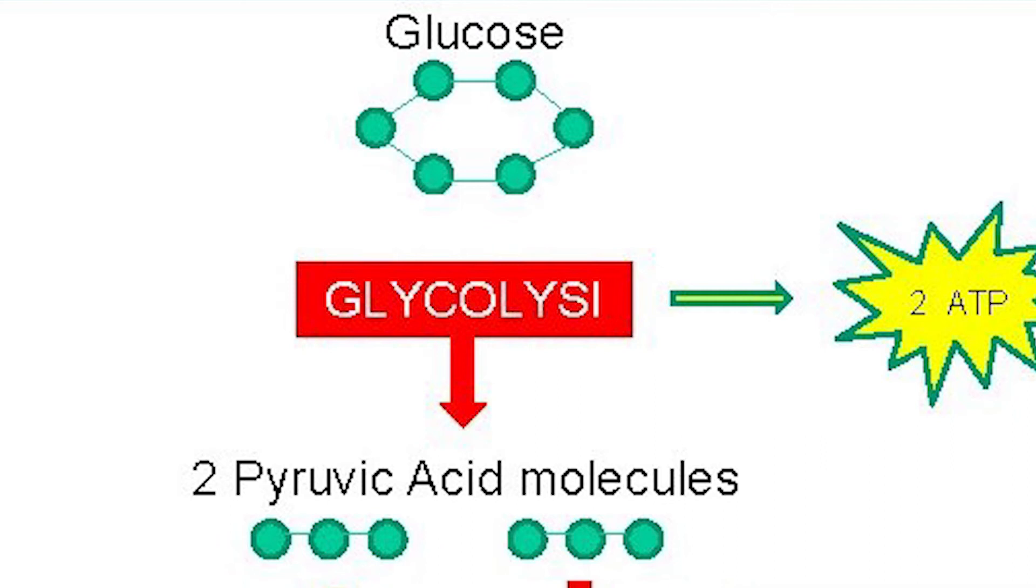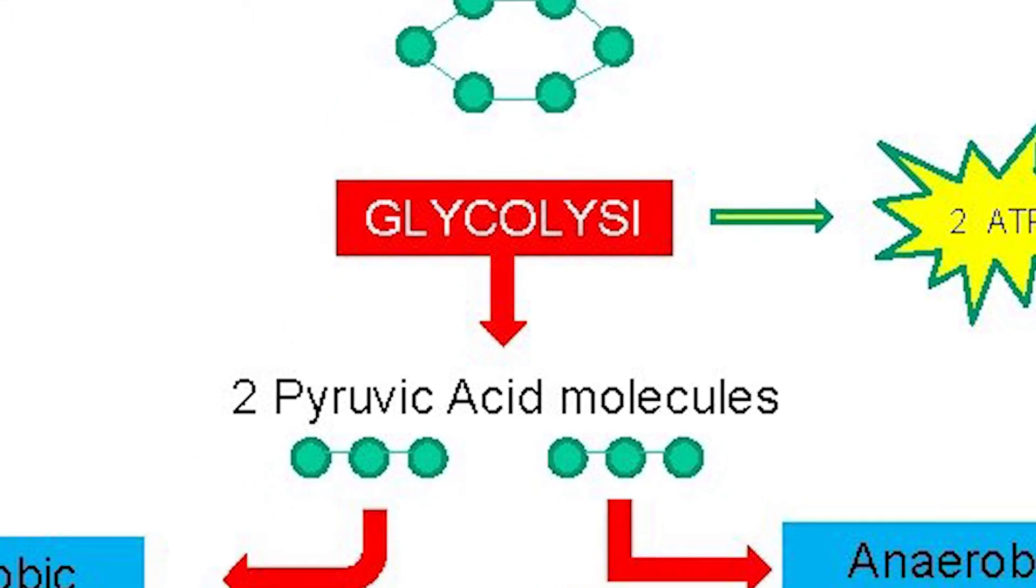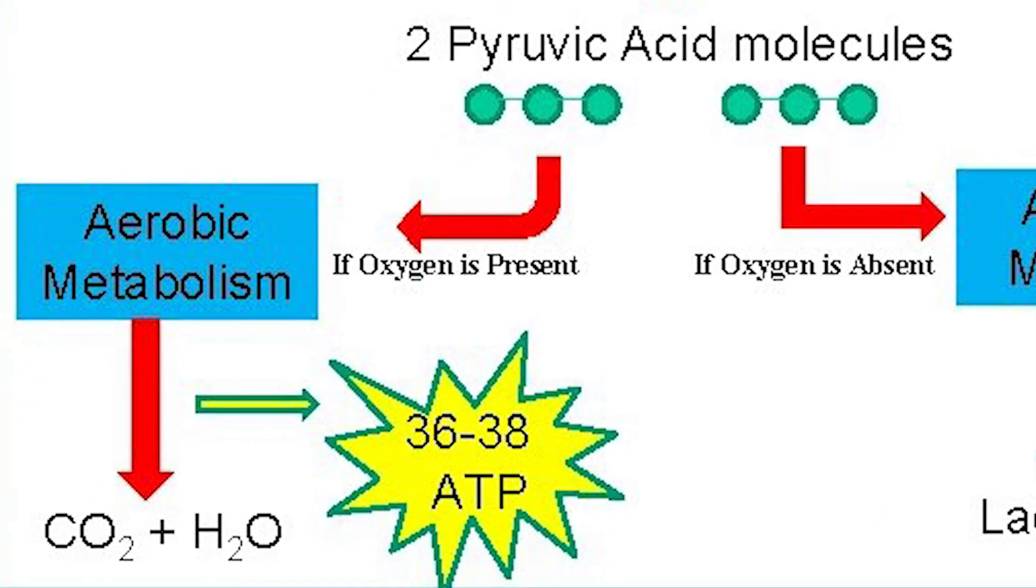Glycolysis happens in the cell plasma and only generates two ATP per molecule of glucose. Respiration can only take place in the mitochondria, but it has a way higher energy yield at 36 ATP per molecule of glucose.